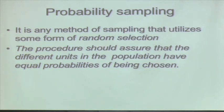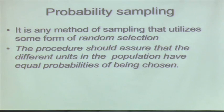What is probability sampling? It is any method of sampling that utilizes some form of random selection — more dependent on statistics. We give equal opportunity to each element in that system to be selected. The procedure should assure that different units in the population have equal probabilities of being chosen — that is called probability sampling.